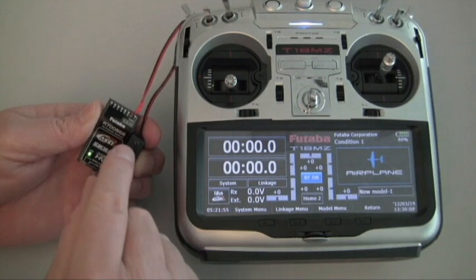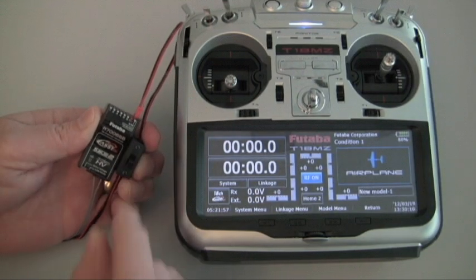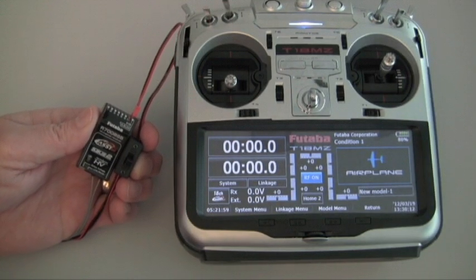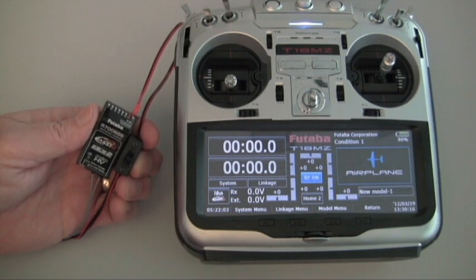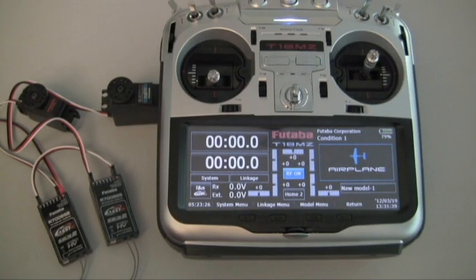Now to confirm that we've got everything working right I'm going to get both receivers powered up and we'll check channel 1 on the first receiver and we'll check channel 15 which I've assigned to the right hand slider on the secondary receiver. I've got both receivers hooked up. I've got them wired into a single battery pack with two servos here so you can see what's going on.